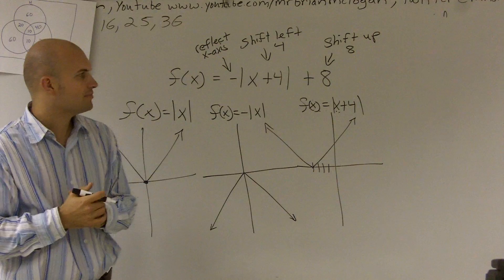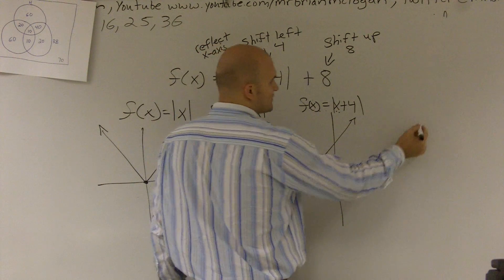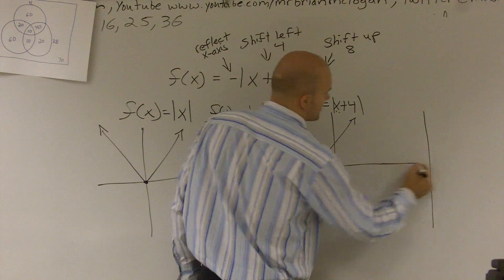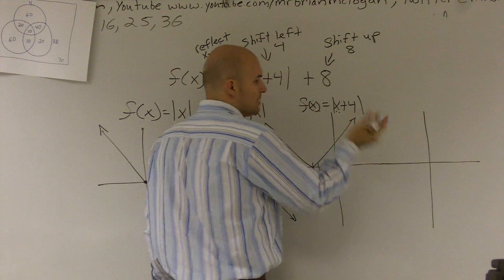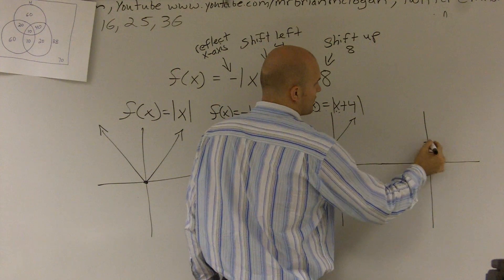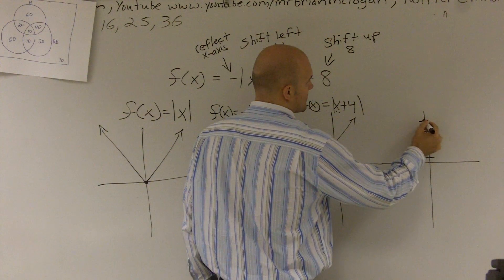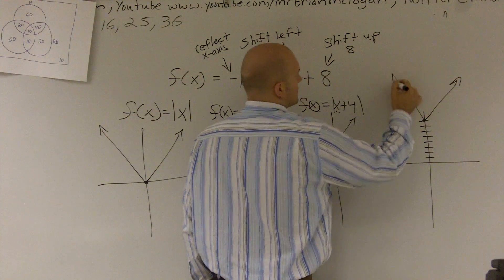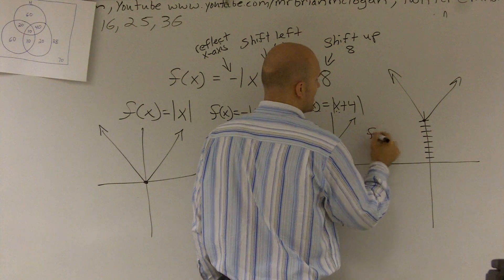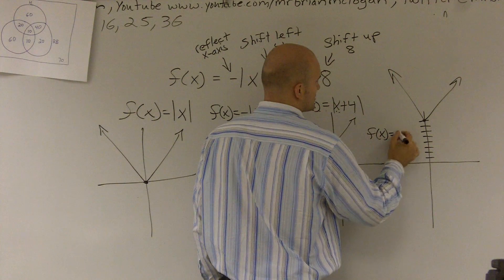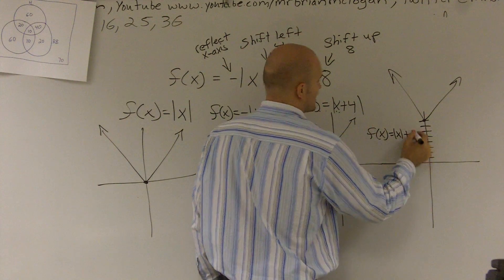And if I was going to do this shift plus 8, now it's going to shift all my y coordinates up 8. 1, 2, 3, 4, 5, 6, 7, 8. And that would be f of x equals absolute value of x plus 8.